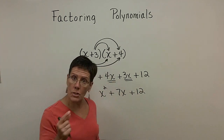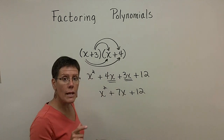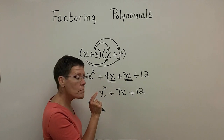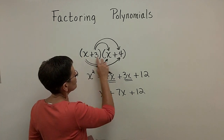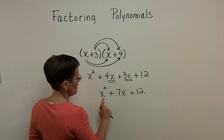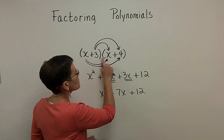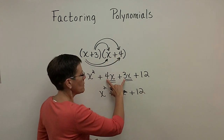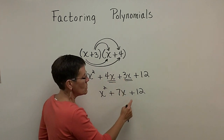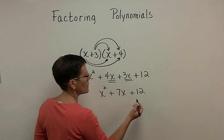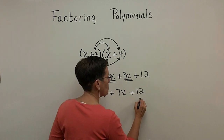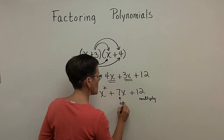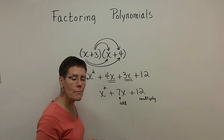This is the kind of trinomial we're going to factor. Notice that the factored form has two binomials each with an x in front, because of the x squared term. The 3 and the 4 multiply to be 12, but the 3 and the 4 add to be 7. So we'll look at the trinomial and find two numbers that multiply to be the constant and add to be the middle coefficient. Let's do a problem.